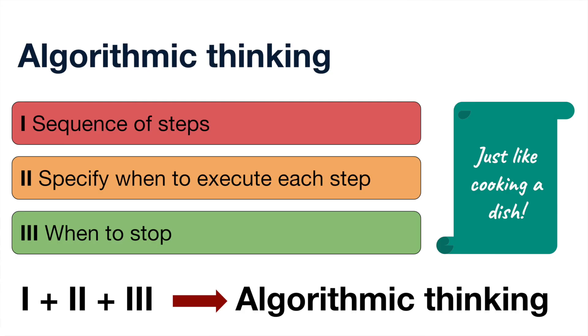If you use the example of tea, then the sequence of steps matters. A simple way to say it is: I boil water, I add the tea leaves, I add the milk, I add the sugar, and I stop after it has reached a certain level. So you have a sequence of steps, you decide when to execute what, and you have to decide when to stop. You actually have to tell the program when to stop — just the way when you're making a cup of tea, you have to decide when to stop.